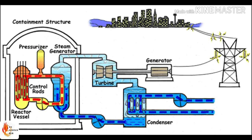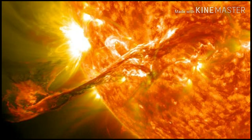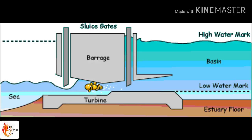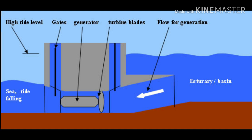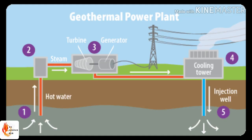Nuclear power comes from a nuclear fission process that generates heat, which is used to produce the steam that rotates turbines to generate electricity. Tidal power is created when tides rotate submerged turbines, and the resulting energy is converted into electricity.